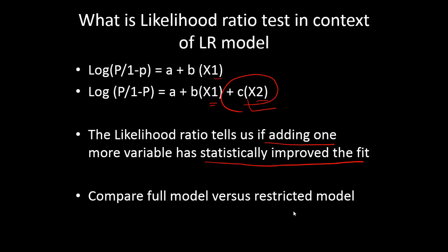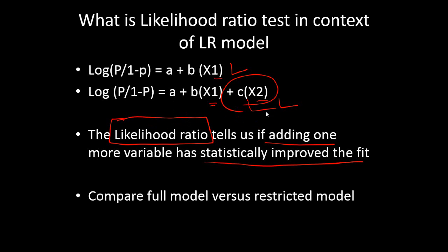There is a restricted model with only one variable and a full model. In other words, we can ask: by dropping one variable, does it have any significant change in the fitness of the model? If the difference is not statistically significant, there is no point in adding a new variable. Every time you add a new variable, you look at the likelihood ratio test statistic, check the significance level, and then decide whether to include that variable. It really helps to select the best set of independent variables for the model.